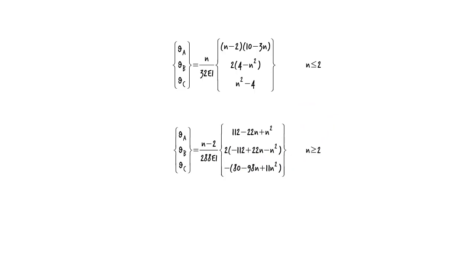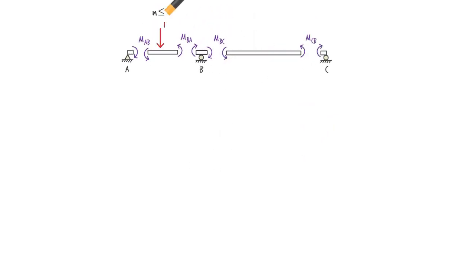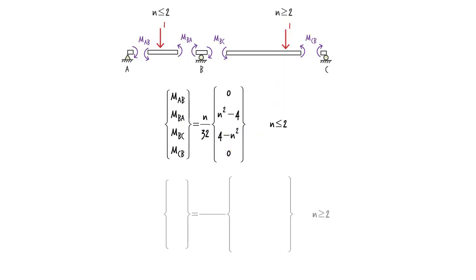Substituting these solutions back into the slope-deflection equations, we get the member end moments. For set 1, we get... And set 2 gives us...